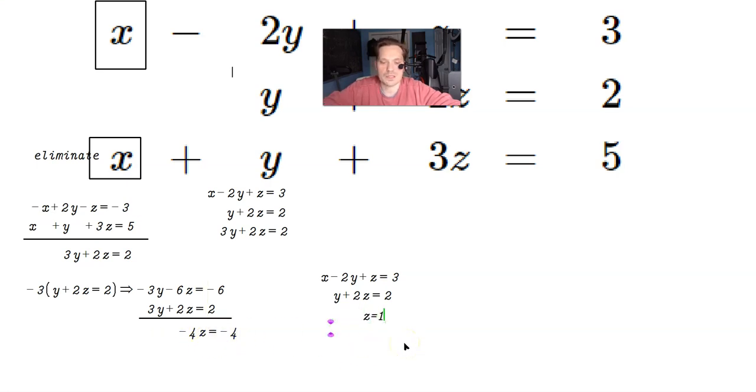So you have z equals positive 1, because negative 4 divided by negative 4 is z equals 1. And now we have this system. This system you can do through back substitution. Just plug the value of z to generate y, and then plug the values of y and z into the top equation to generate x.